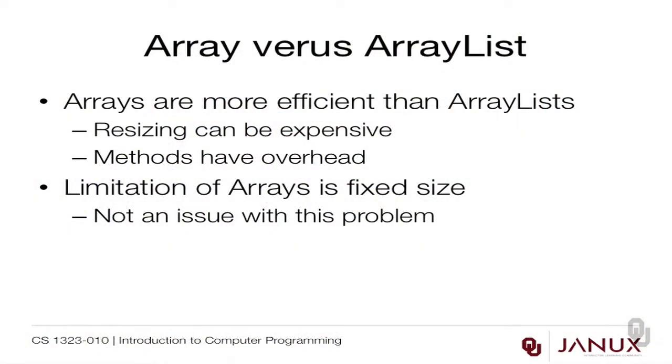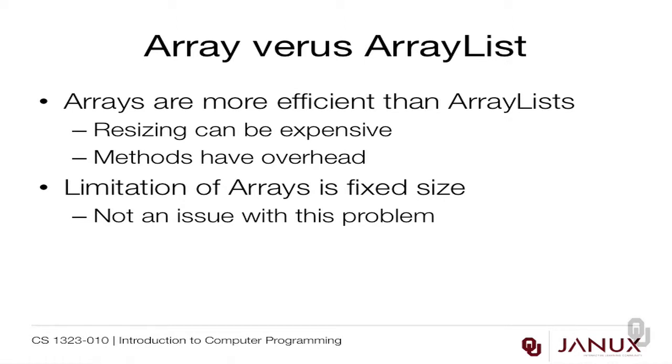The next thing we need to consider is a very important choice: do we want to use an array or an array list? Arrays are generally more efficient than array lists because they have less overhead. Resizing, which the array list does behind the scenes outside of your control, can be very expensive. Also, to call a method there are usually 5 to 10 assembly language instructions that get executed to set up parameter passing and handle return values. The limitation of arrays is that they have a fixed size, but in this case a fixed size isn't a problem because we only want five people in our hall of fame. If you know what the size should be, an array is always the right choice.